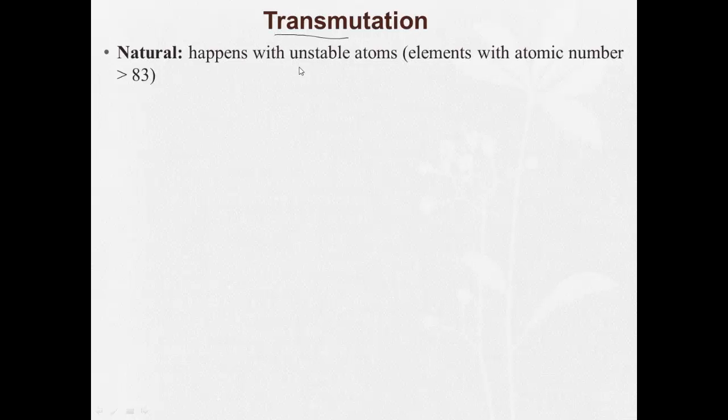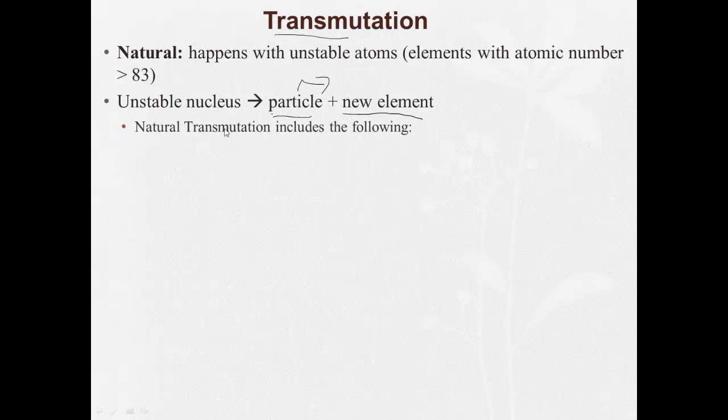So natural transmutation happens with unstable atoms, elements with atomic number greater than 83. And what happens is this large unstable nucleus changes into a new element by giving off some sort of particle, usually. Natural transmutations include the following.